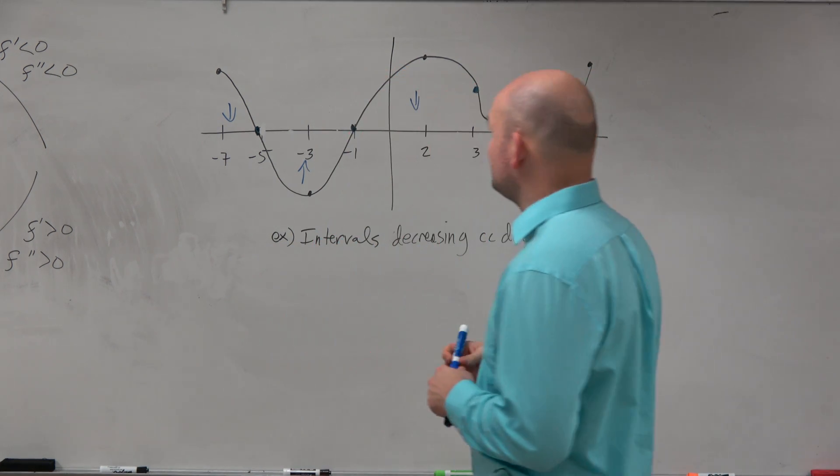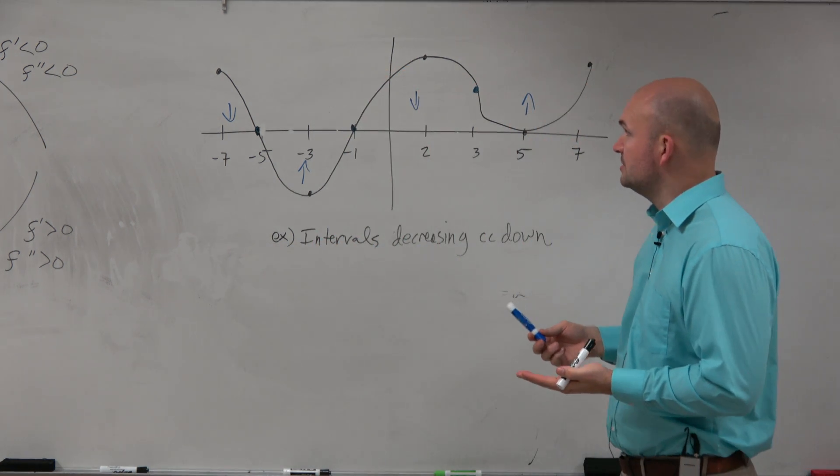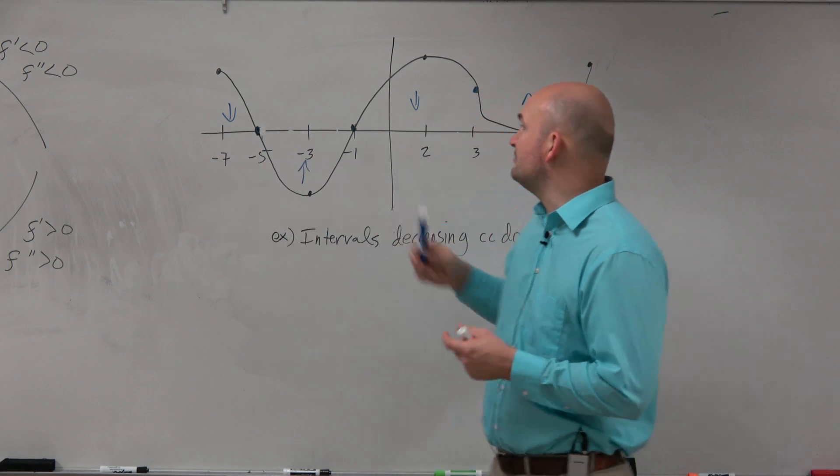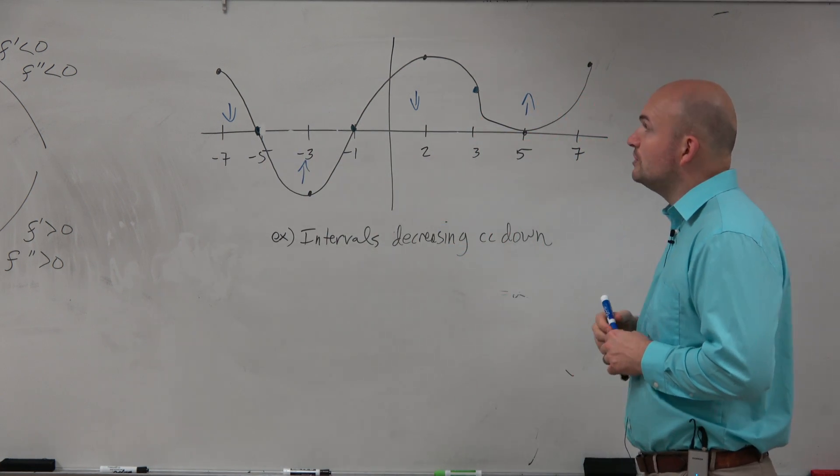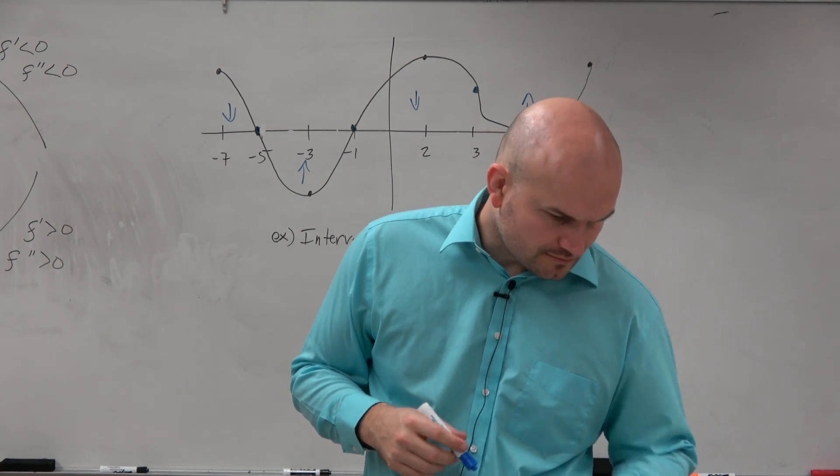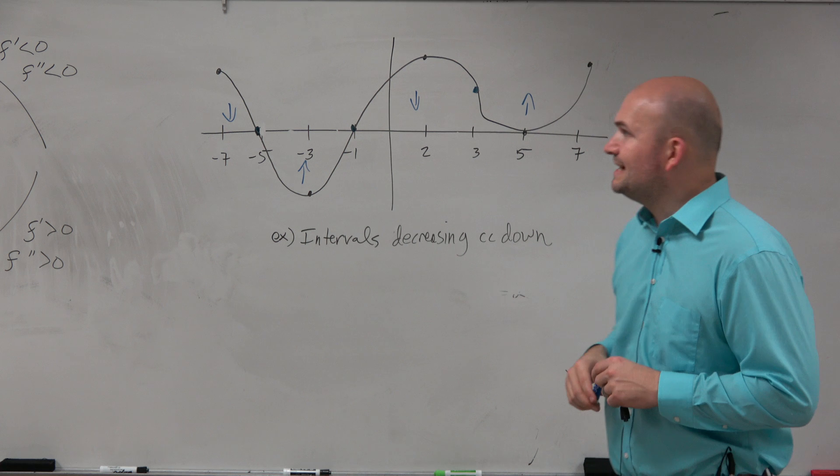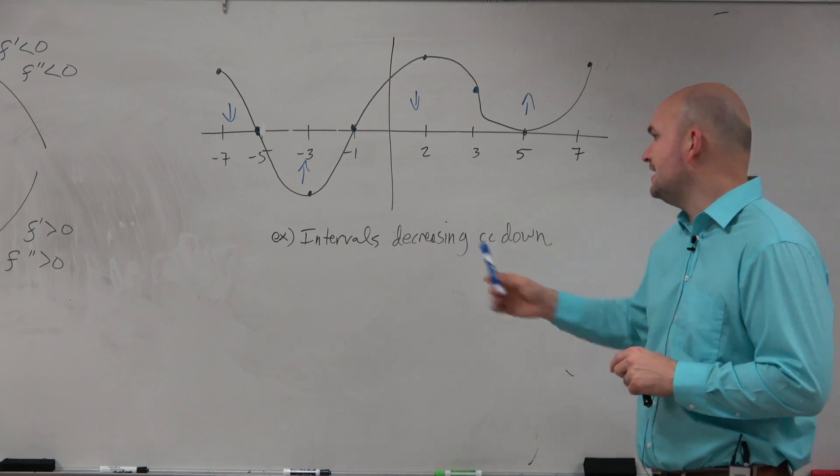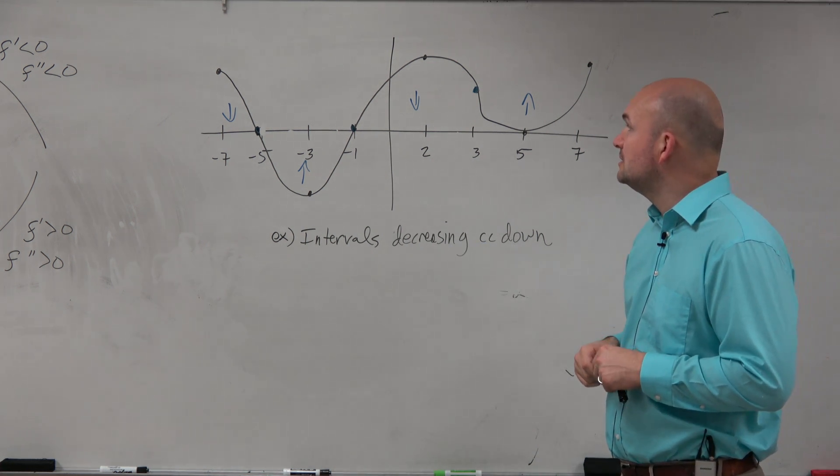So again, we're looking for when it's concave down. So we only have a couple intervals, right? We only have intervals from negative 7 to 5 and from negative 1 to 3. But we're looking for when it's concave down and the intervals is decreasing.